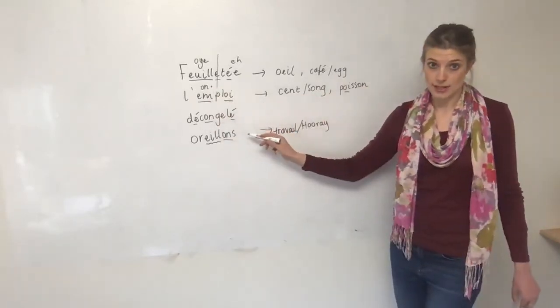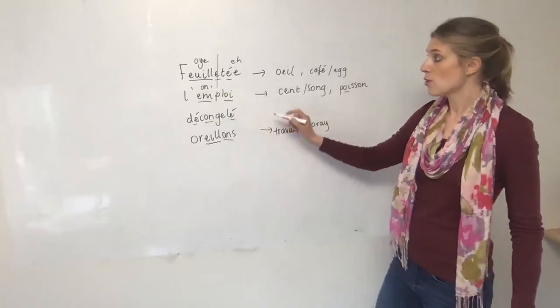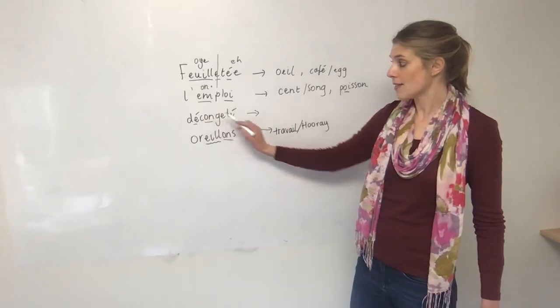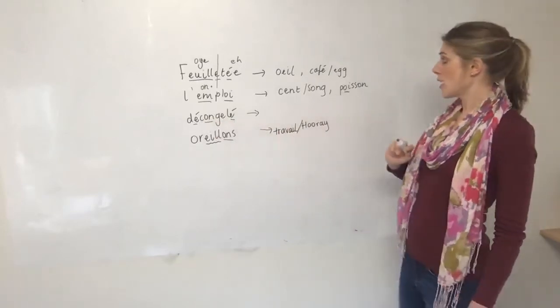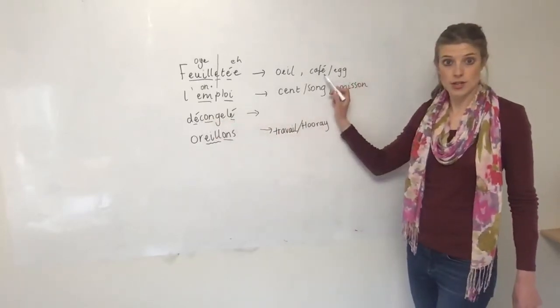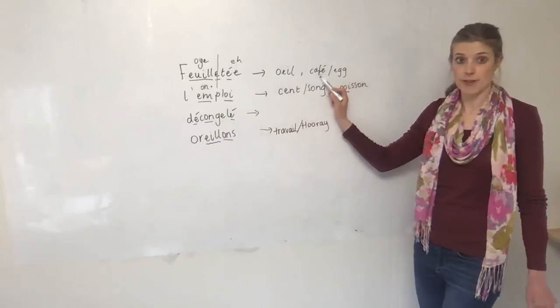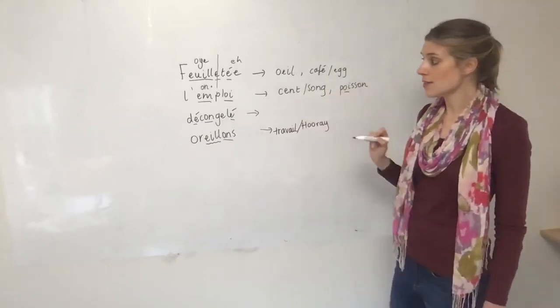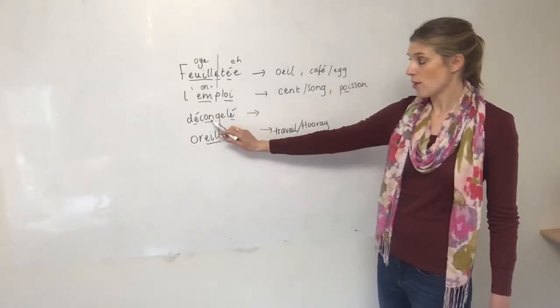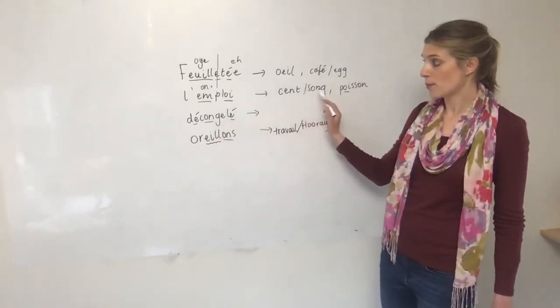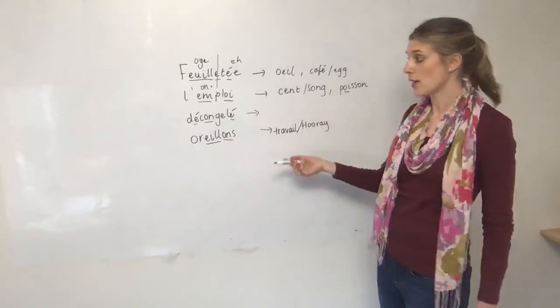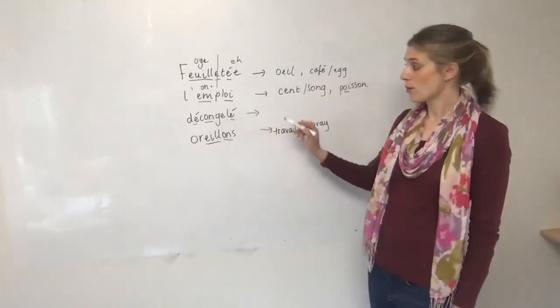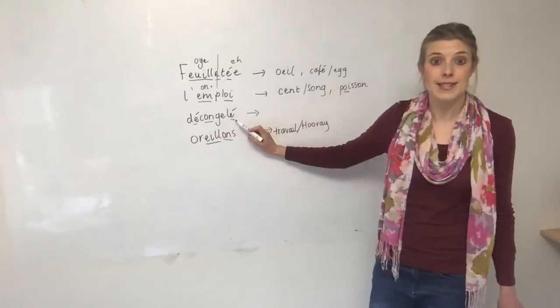Then we've got décongélé. So with décongélé here we've got the same sounds again, the E accent, so they are shown on the sound chart through the French side café, the English side egg, and the ON. Once again we have the ON which is through this example, very common sounds in the French language. So décongélé. Also on the sound chart I wrote that you say the last letter when it ends in an E accent.